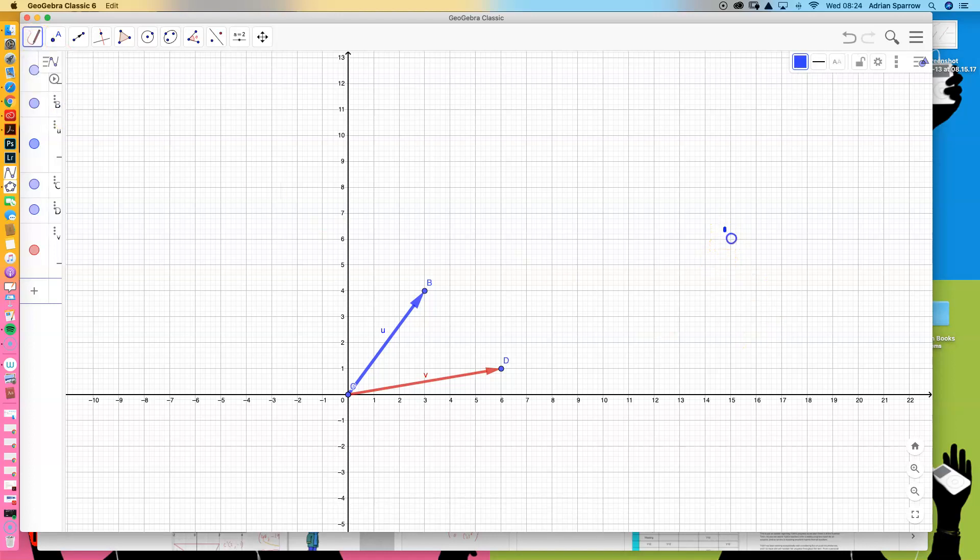So u is the vector (3, 4) and v is the vector (6, 1).